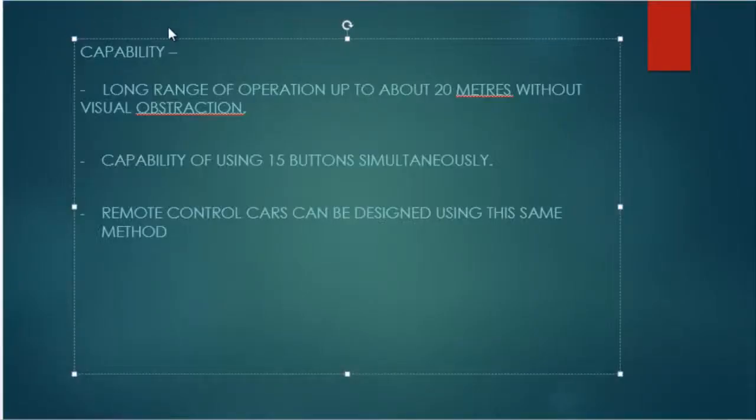Using this method, long-range operation is possible up to about 20 meters if there are no visual obstruction between the transmitter and the receiver. And this method that we used is also capable of using 15 different buttons of the remote. That means 15 different electrical appliances can be run at once. And this remote control method can also be used to develop remote control cars.